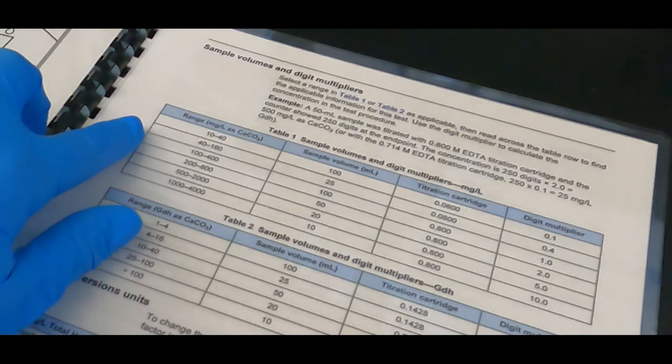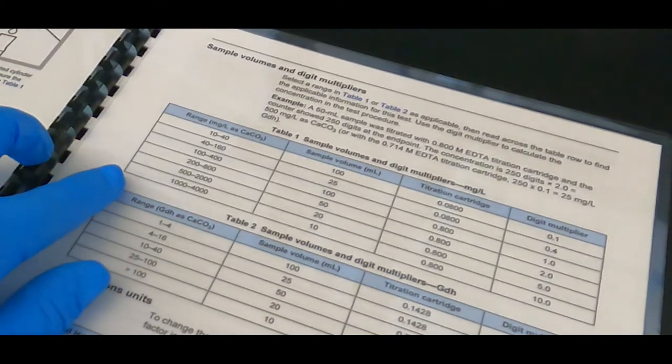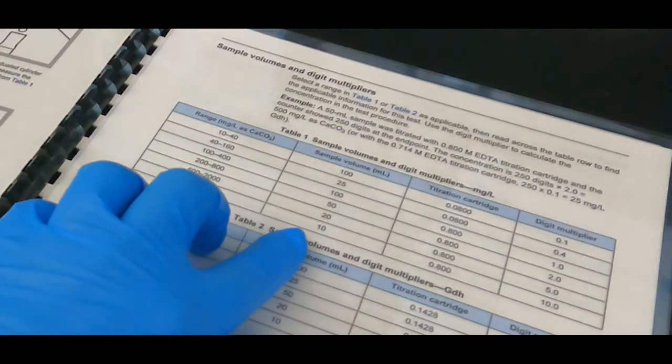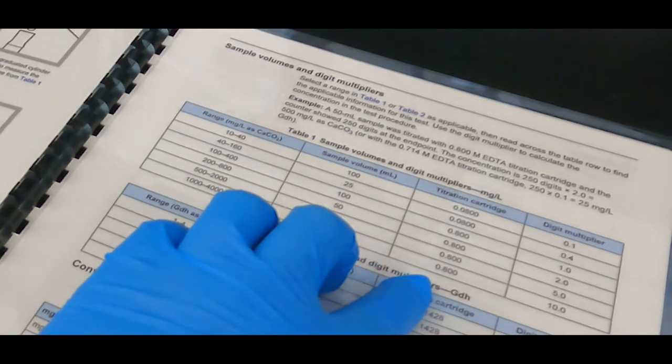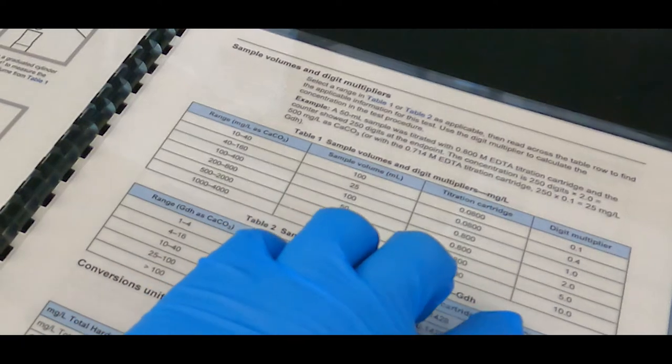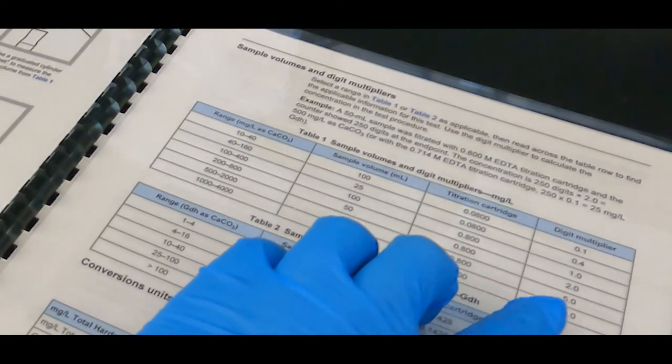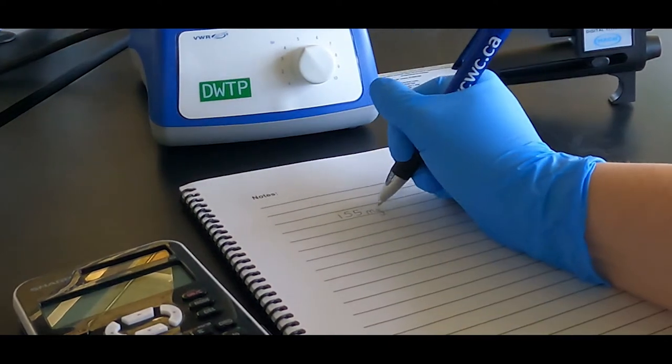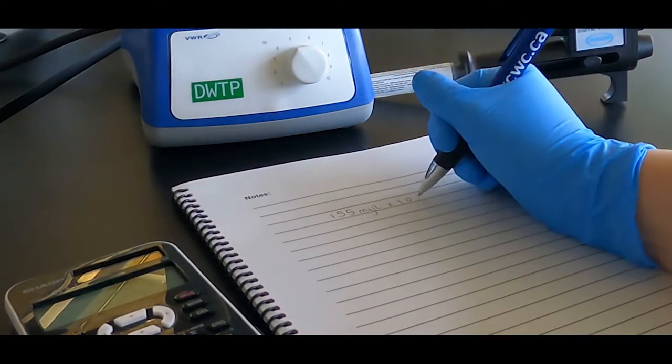Select a sample volume and titration cartridge from the table provided in the method. You will need to know the approximate range of hardness in the sample you are testing or guess and repeat the test as necessary. The digit multiplier will be what you multiply your result off the titrator by to obtain the true concentration.